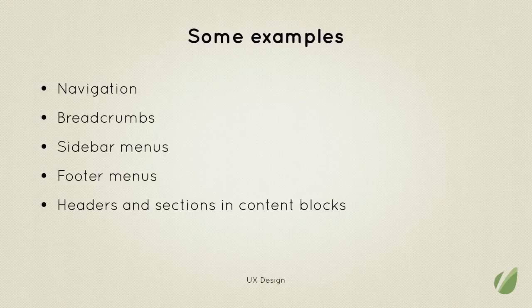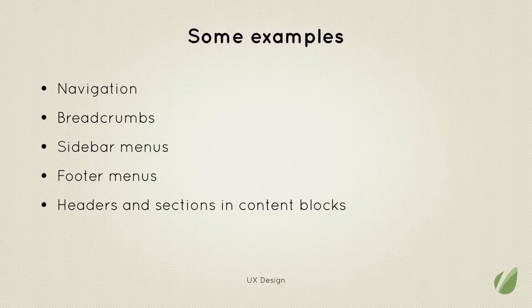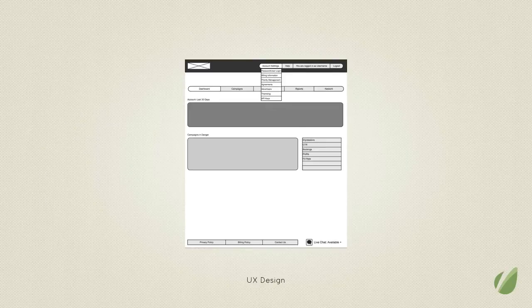Here are some examples — these are all things that work together to make up a site's information architecture: the navigation, breadcrumbs, sidebar menus, footer menus, headers and sections, and content blocks. These are all things you'll see in a site that help you move through the content and find things. And here's another example: in this wireframe for an application I was working on, you can see how we worked with different levels of navigation and content blocks to get a logical hierarchy organized.